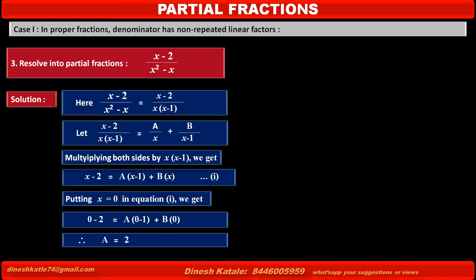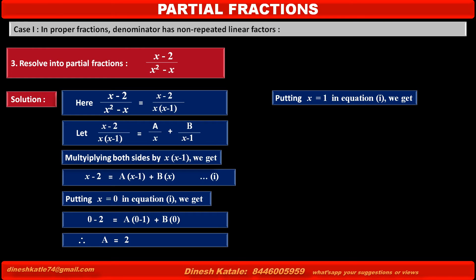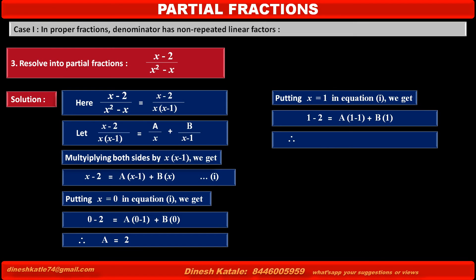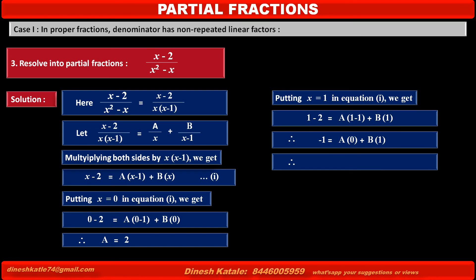To find the value of b, we eliminate the term containing a. Putting x equal to 1 in equation 1, the left hand side becomes 1 minus 2, equal to a(1 minus 1) plus b(1). Therefore, minus 1 equals a·0 plus b·1. Solving, we get b equal to minus 1.